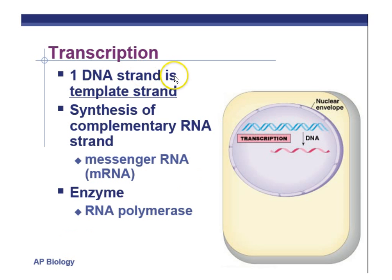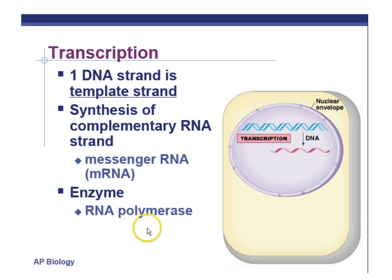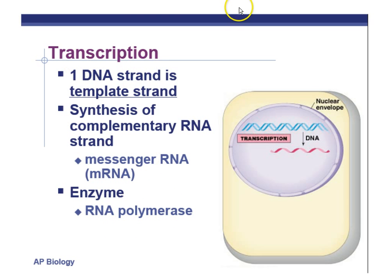Transcription is using a set of DNA sequences on a gene on the chromosomes and making a complementary RNA molecule. The enzyme used for this is called RNA polymerase. RNA polymerase makes RNA; DNA polymerase makes DNA. RNA polymerase is used during transcription; DNA polymerase was used during replication.